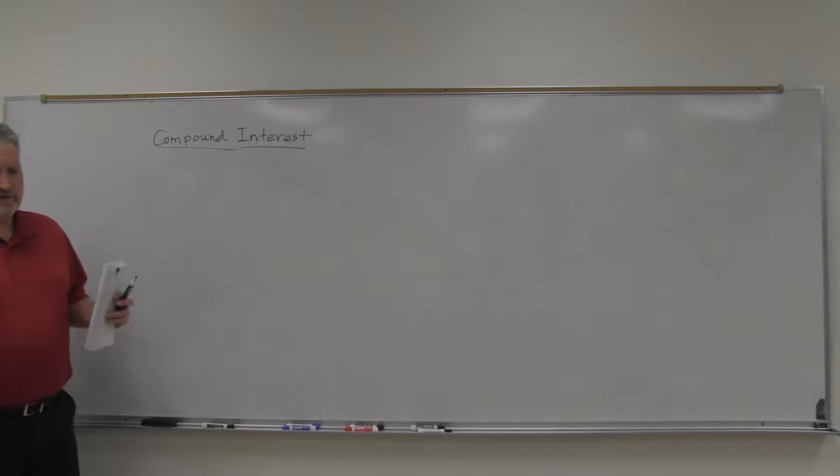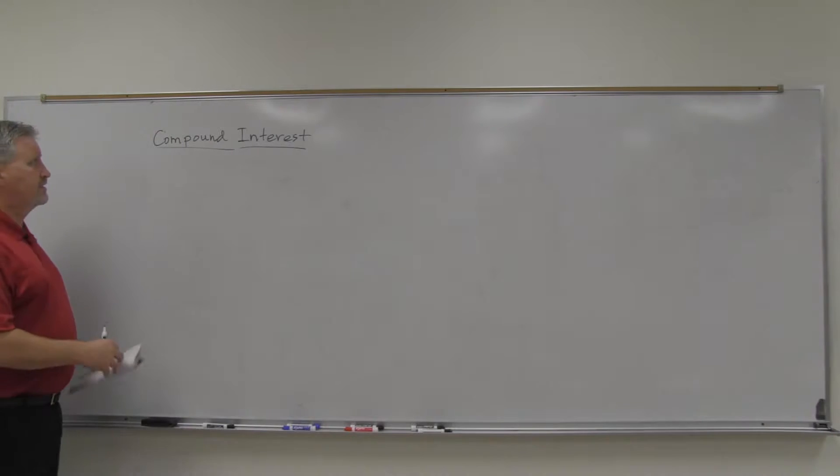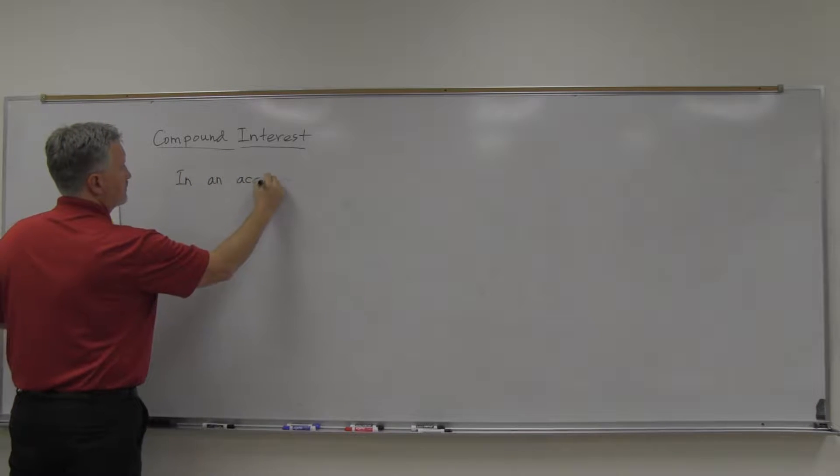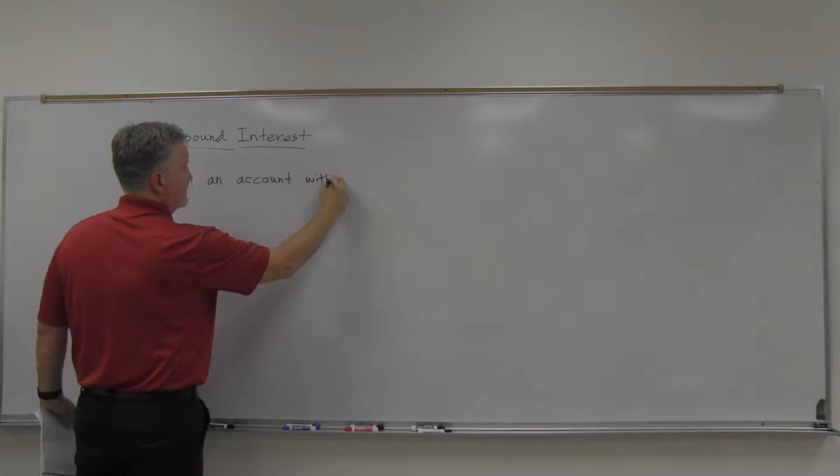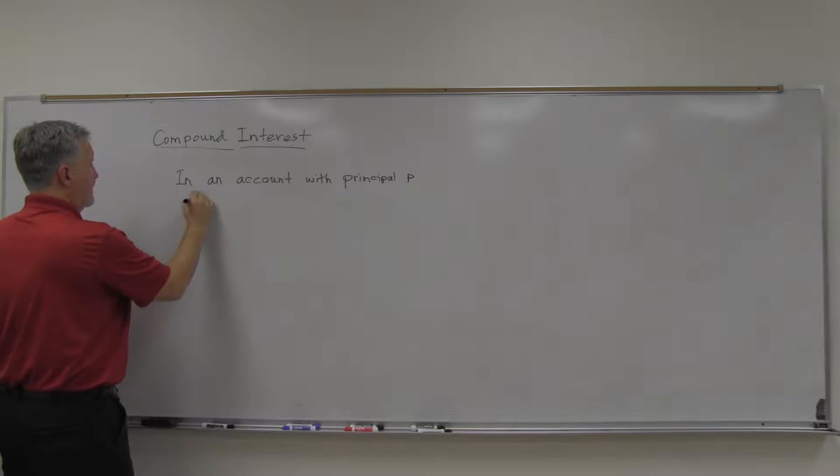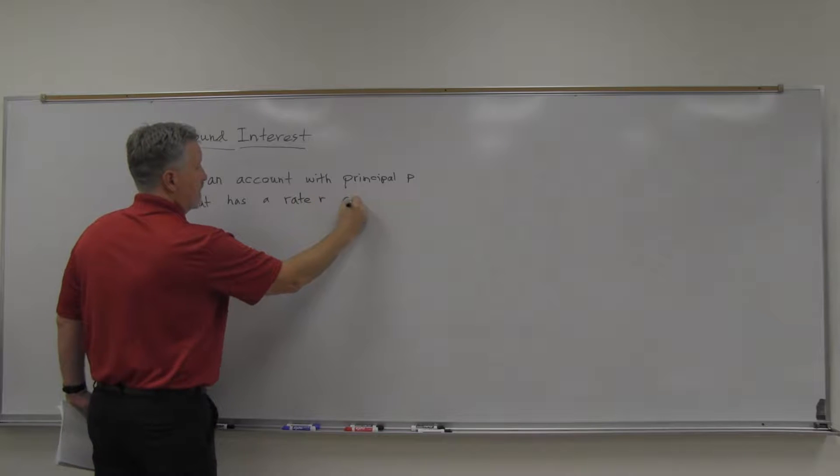If we have an account, a bank account or some other type of account that's gaining interest and it's compound interest, it turns out that's an exponential function. Here's the formula. In an account with principal P, principal is just the amount you start with, that is compounded or that has a rate R compounded.